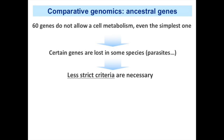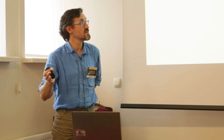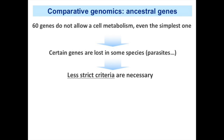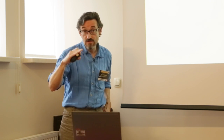Probably there is a methodological problem here. A very evident source of issues is that we know genes can be lost in some species — for example, parasites tend to reduce their genome by losing genes. So the fact that a particular gene is not found in all species does not necessarily mean it was not ancestral; it may simply have been lost in some lineages. We must apply less strict criteria to reconstruct the list of ancestral genes.